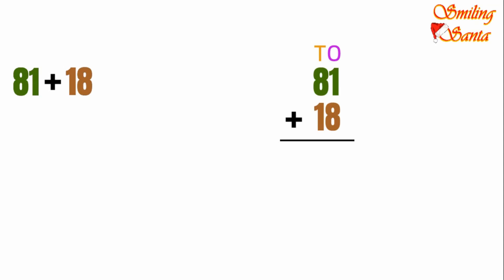So let's add one and eight. We will put one dot — one. Then we will put eight more dots — one, two, three, four, five, six, seven, eight. Count them all together: one, two, three, four, five, six, seven, eight, nine. Put the answer — nine — in the ones place.